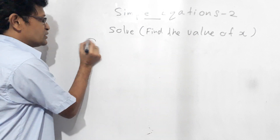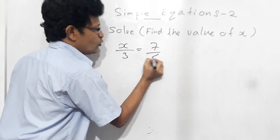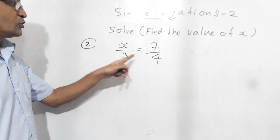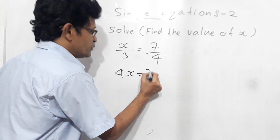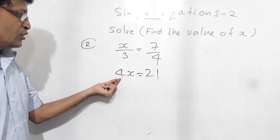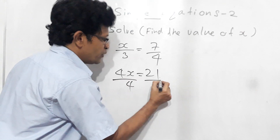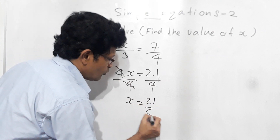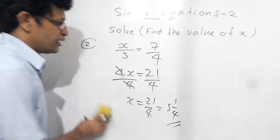Now we will do the second question: x over 3 equals 7 over 4. Again we do cross multiplication: 4 into x equals 3 into 7, which is 21. To get rid of this 4, we divide both sides by 4 — the 4s cancel — so x equals 21 over 4, that means 5 and 1 over 4.